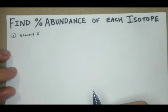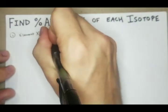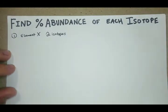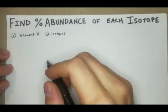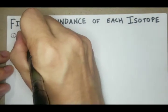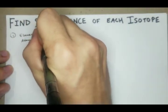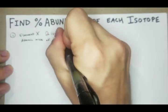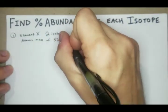Element X has two isotopes. Element X has an atomic mass of 52.8 AMUs.